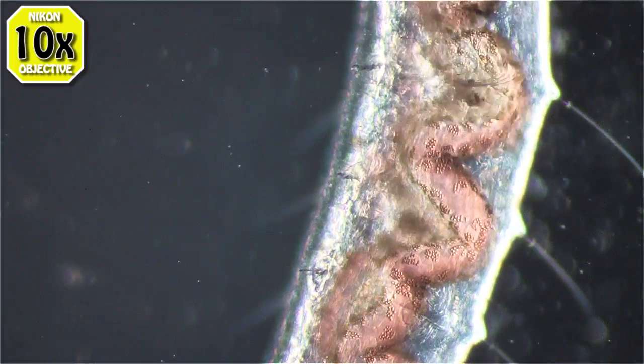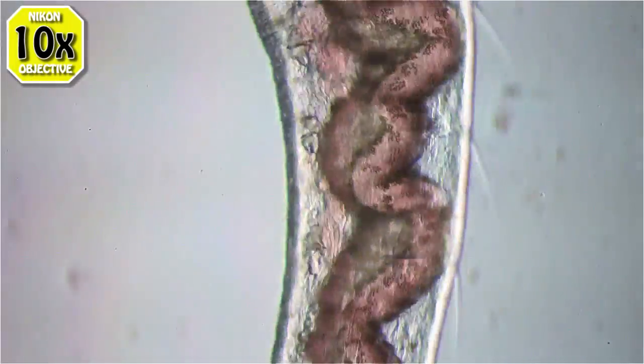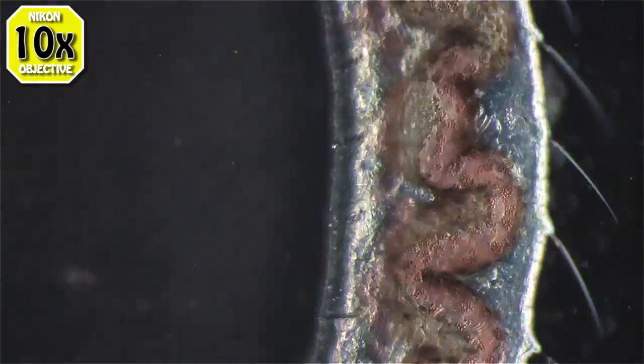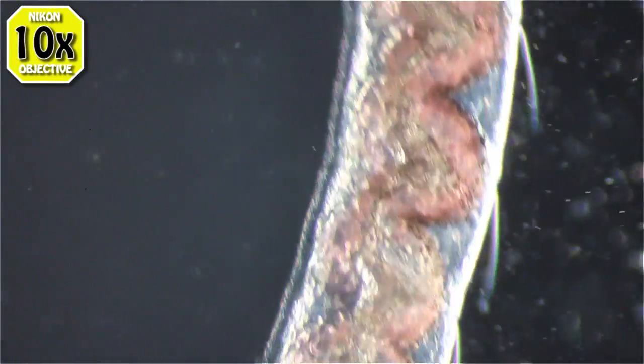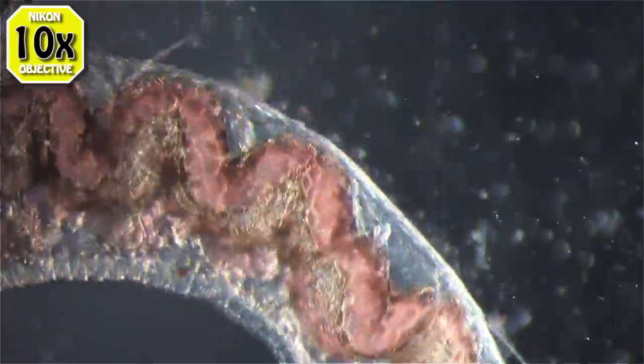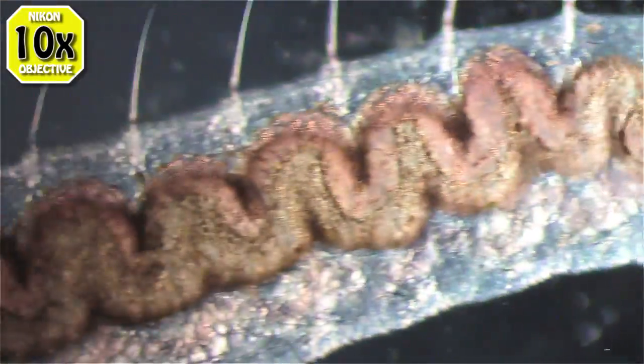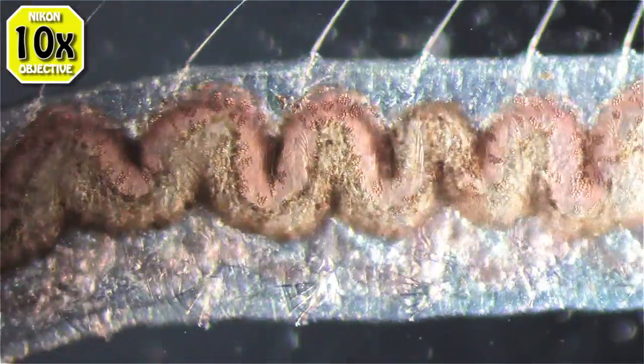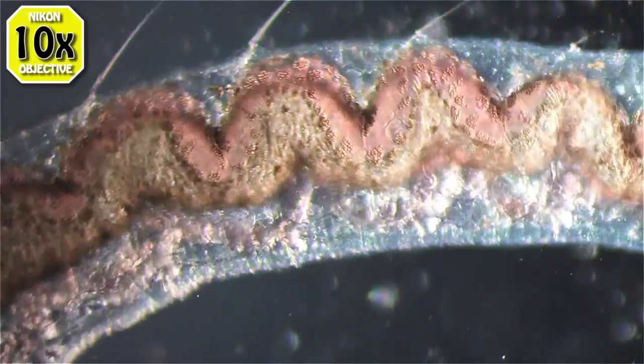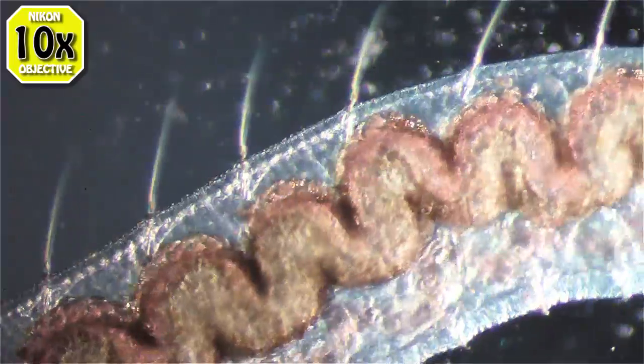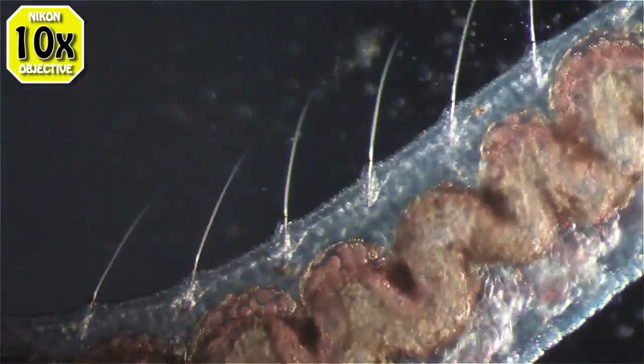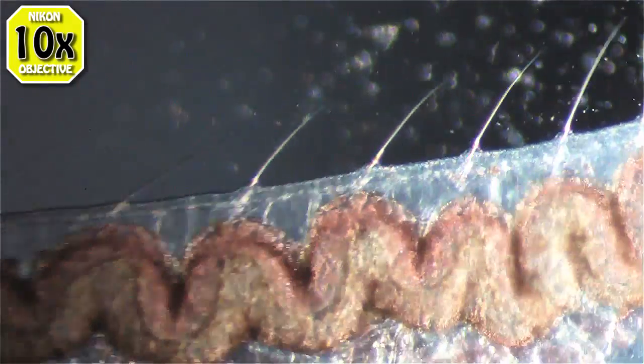If it's in the bright field position and you offset it a little bit, you get nice oblique lighting and if you go a little further you get dark field. I've never been a big fan of dark field, but this works pretty good.